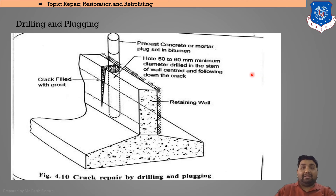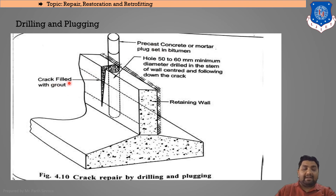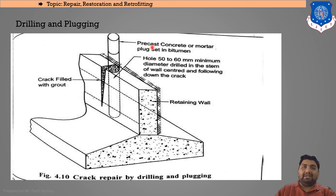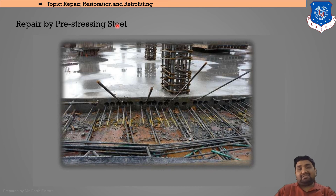Drilling and plugging: shown on a retaining wall, the crack is first drilled and then plugged with a pre-cast concrete or mortar plug set in bitumen. A hole of 50 to 60 mm minimum diameter is drilled centered on the stem of the wall following down the crack, and then plugged via pre-cast concrete or mortar.